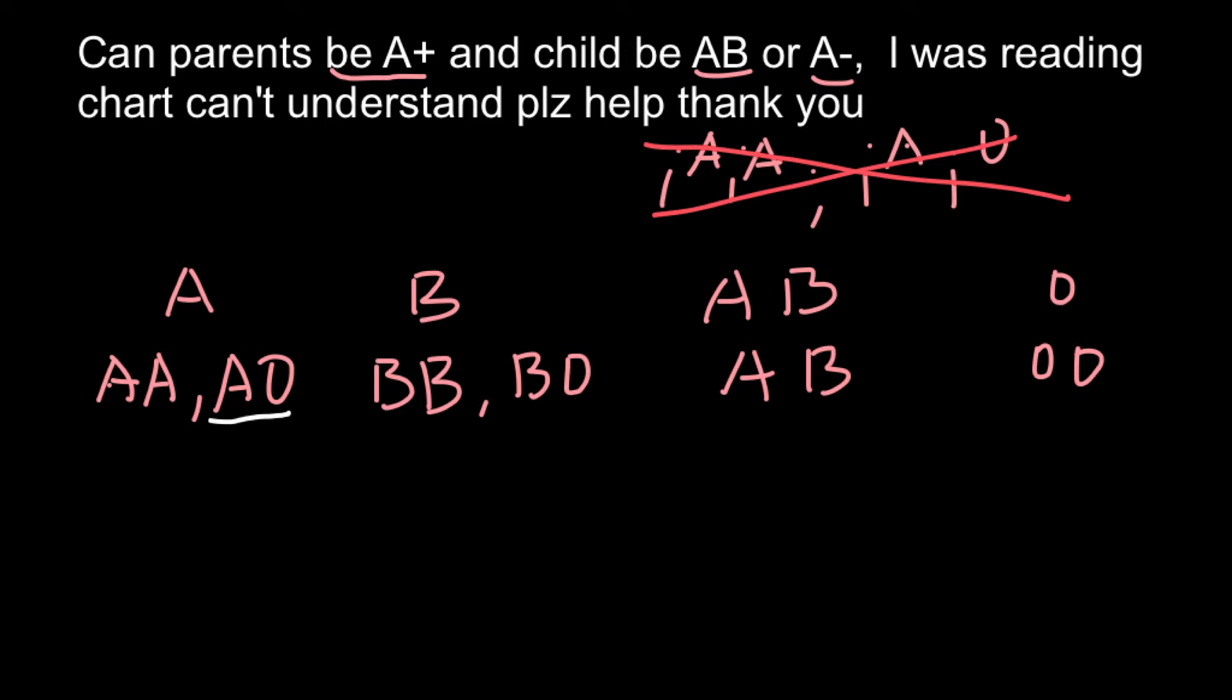So let's do it. Imagine that one parent has genotype AO, let it be male, and another parent also would be AO, and this is going to be female. And when we build the Punnett square, we can see what two parents who belong to the blood group A...